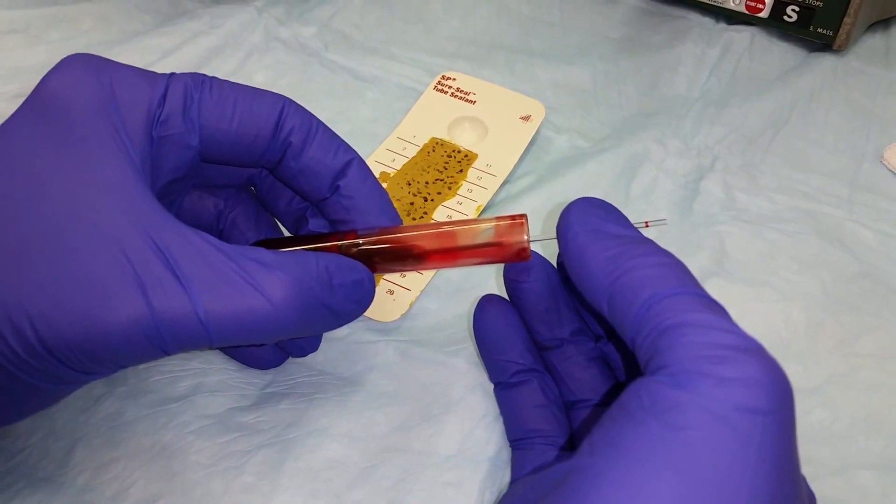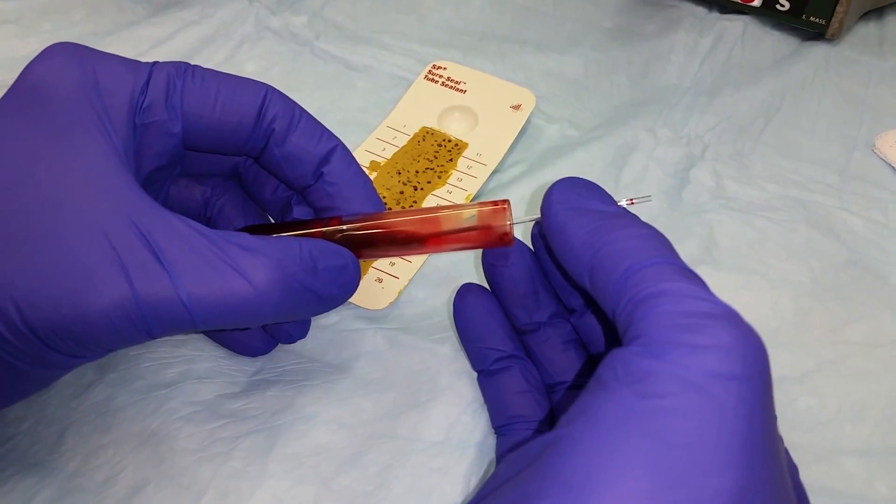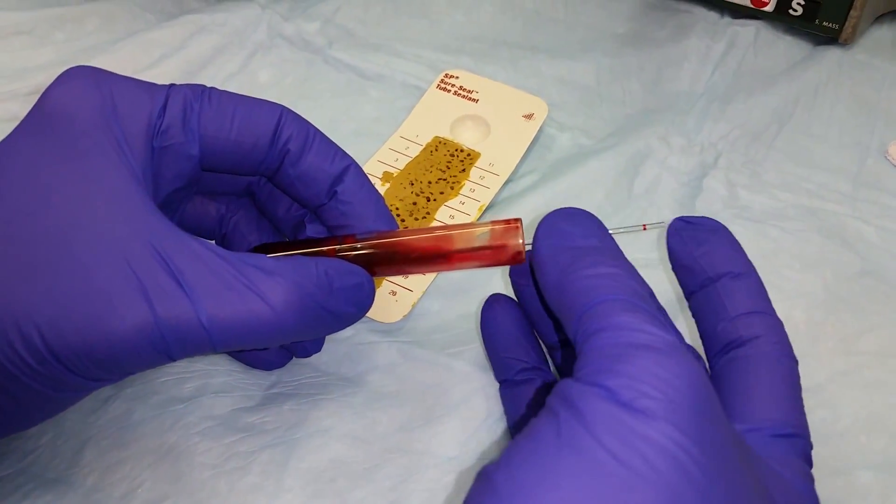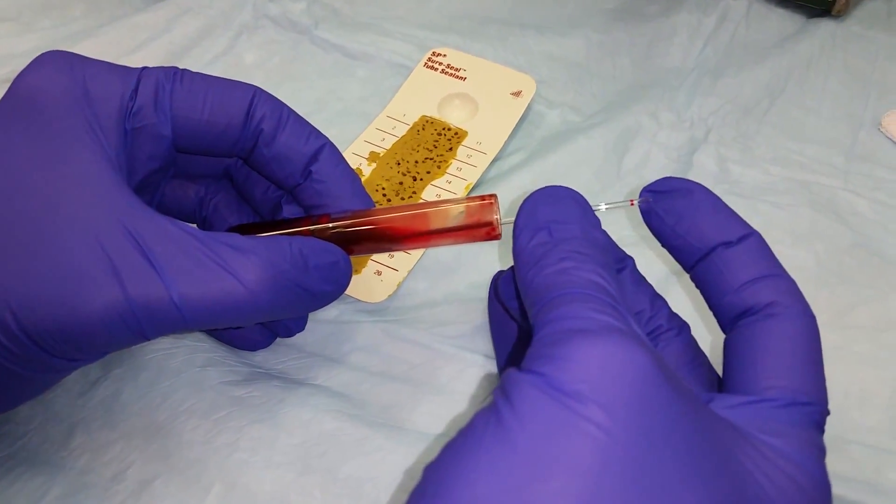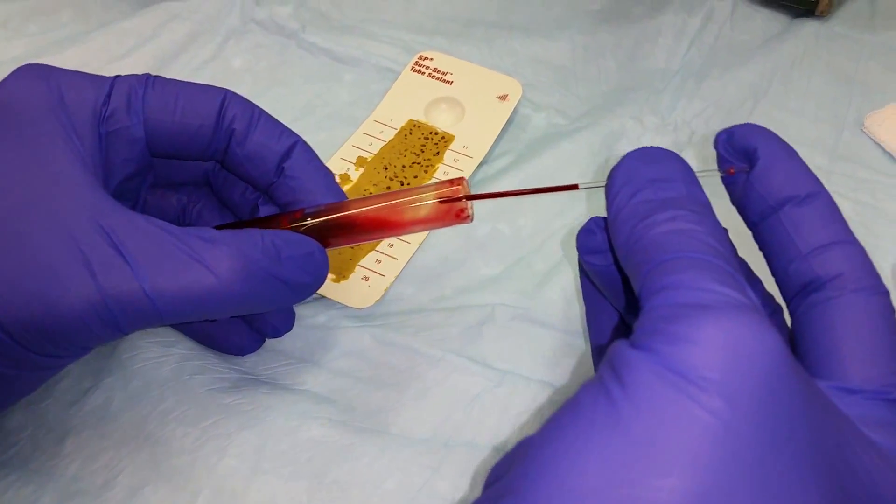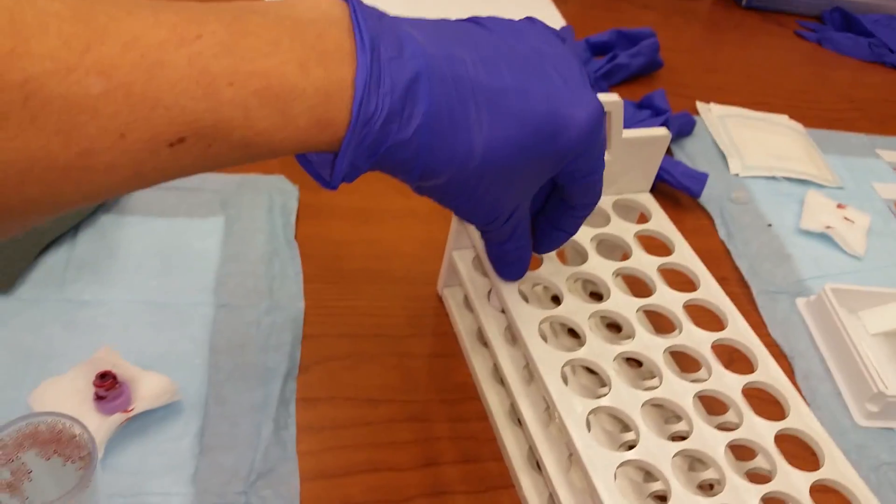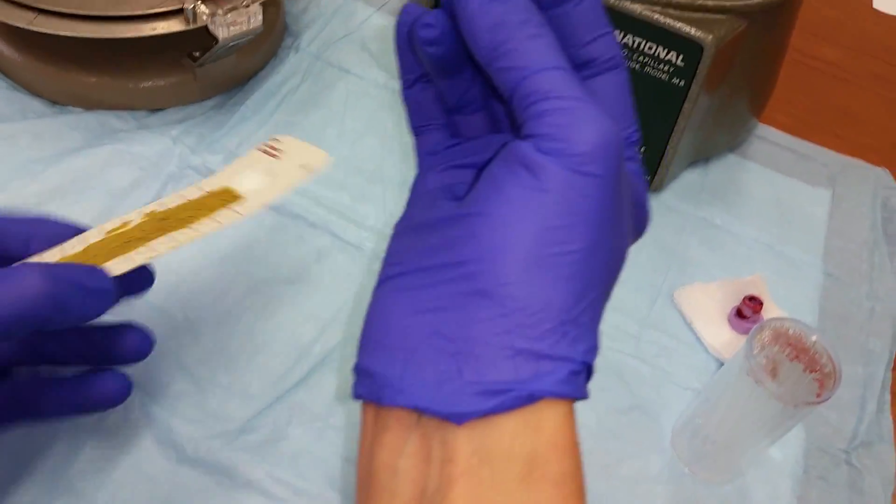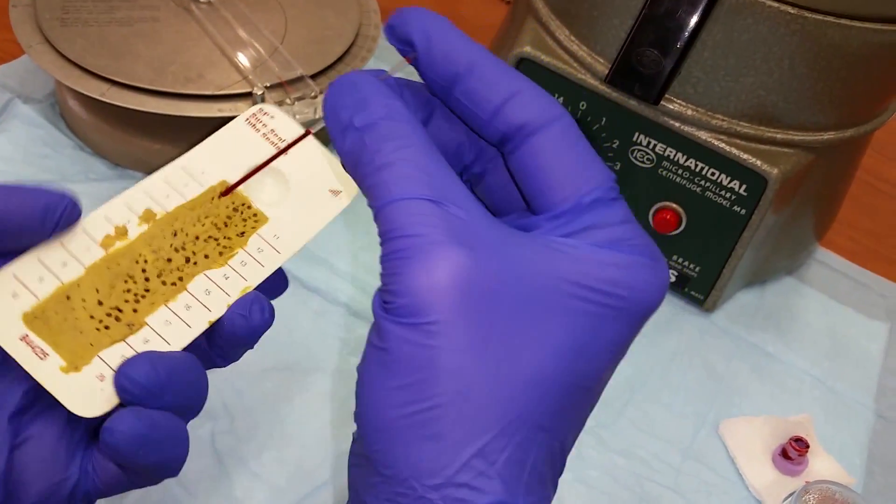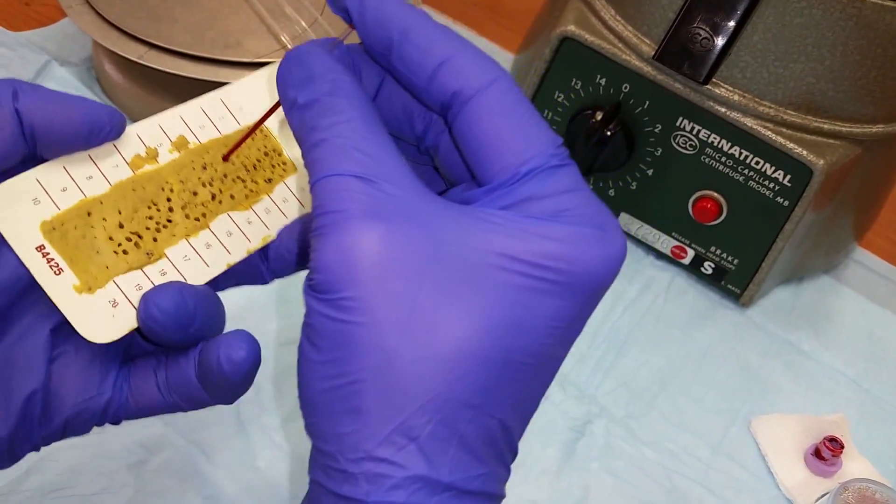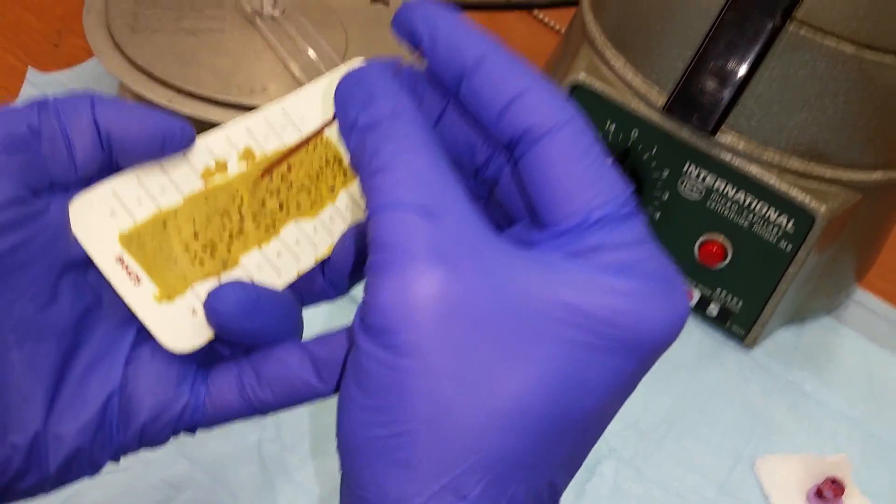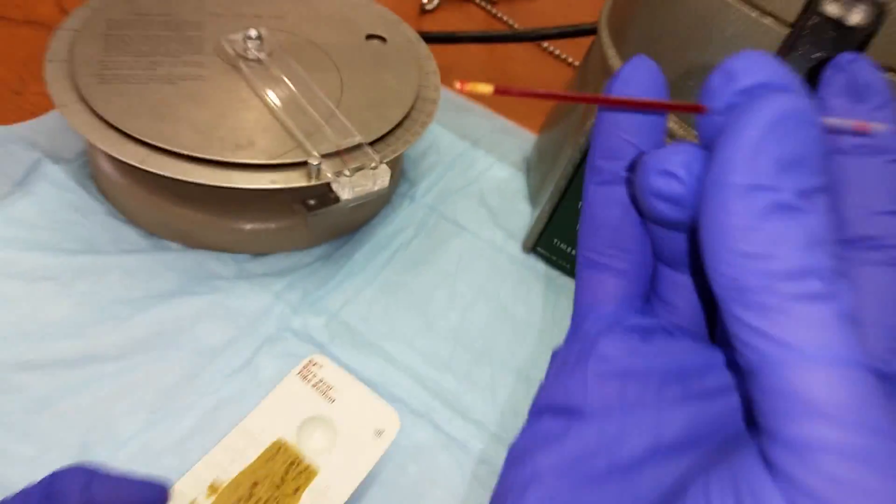Once the blood has reached about the halfway point, before you remove it from the tube, you want to place your index finger on the top of the tube, and then you want to cap the bottom of the tube by inserting it several times into the clay, which will then cap the bottom.